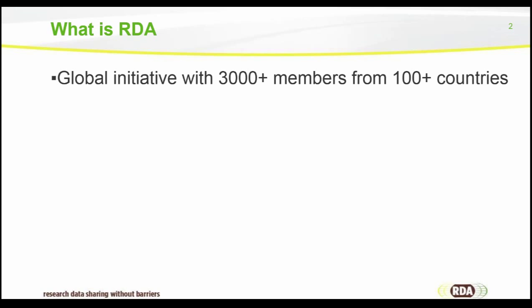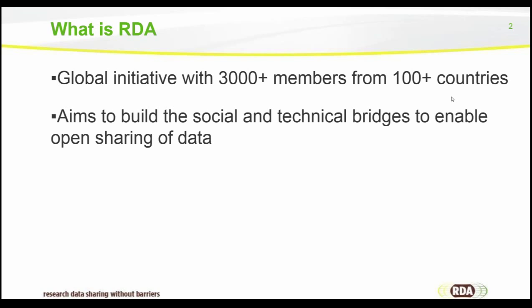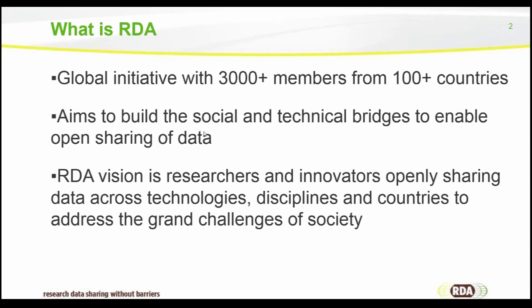I assume that most of the people on the call at least have an inkling of what RDA is, but I will just give a very brief overview, focusing on the things most relevant for the outreach efforts I'm going to talk about. The Research Data Alliance is a global initiative with over 3,000 members from over 100 countries, aiming to build the social and technical bridges to enhance the open sharing of data. The RDA vision is researchers and innovators openly sharing data across technologies, disciplines, and countries to address the grand challenges of society.